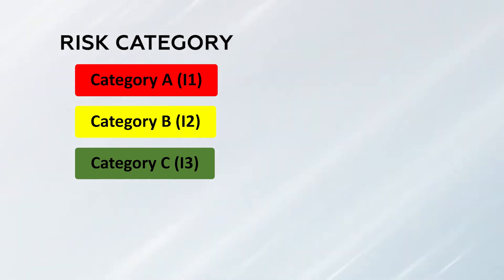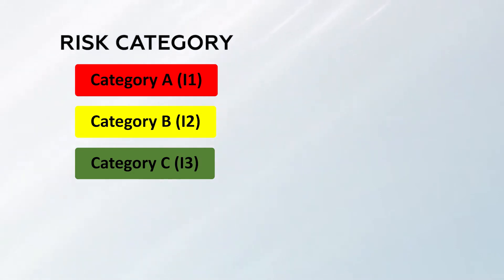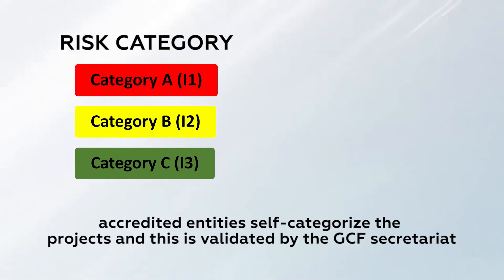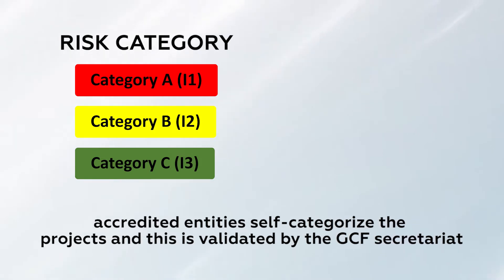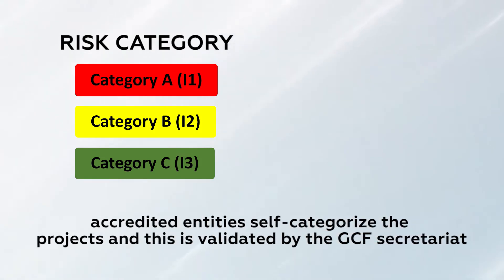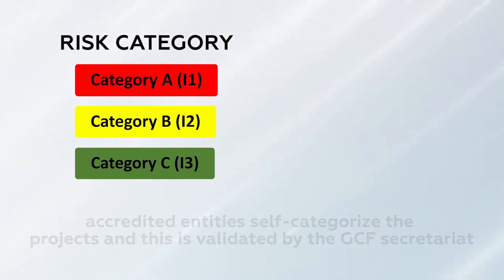Category A includes, for example, cases where indigenous peoples or communities would be relocated because of a funding proposal. The categorization is based on the accredited entity's assessment of the funding proposal in consultation with the GCF Secretariat. There is a template with a tick box indicating the category and the reasons for it. Entities must identify which risks are attached to the project and also specify in the template how they will mitigate all identified risks.